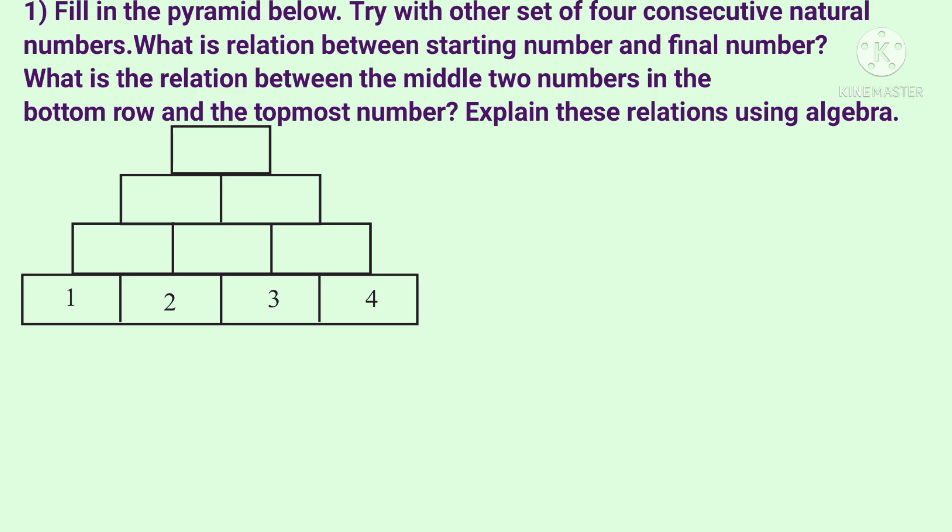Explain these relations using algebra. The number is filled with the starting number and the final number is related to the relation. This is the relation between the bottom row middle two numbers and the topmost number. This is the algebra to explain.